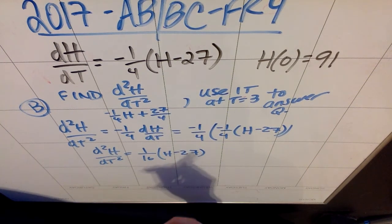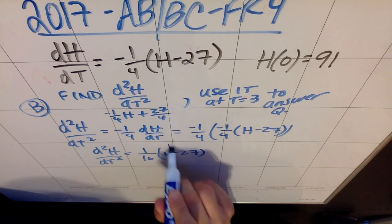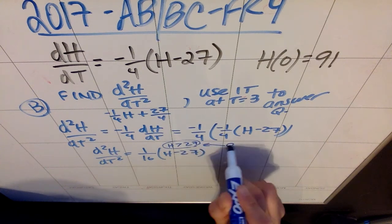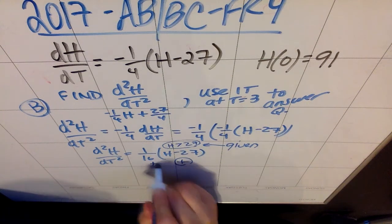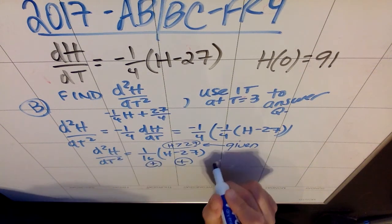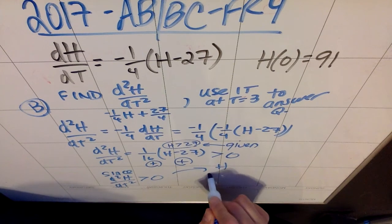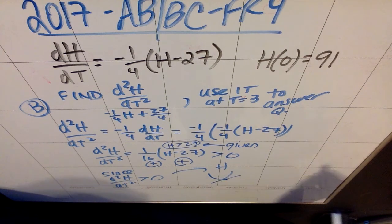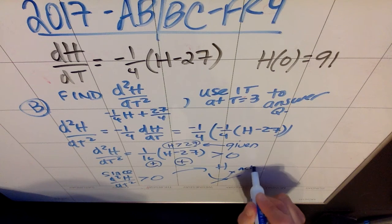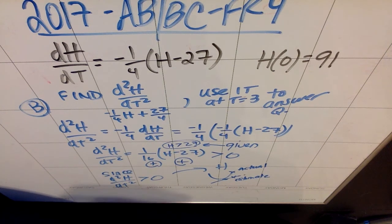I'm then asked if my answer is an under or over estimate. The thing about this is that since we know that H is always over 27, this was given in the information at the top of the problem, this has to be a positive quantity. And since 1/16 is just 1/16, which is positive, what I get from this is that d²H/dt² is greater than zero. So since d²H/dt² is positive, I know that H looks like this. H is concave up.